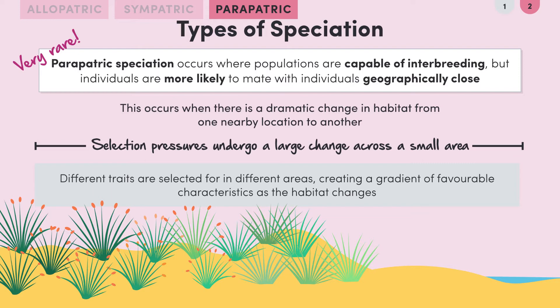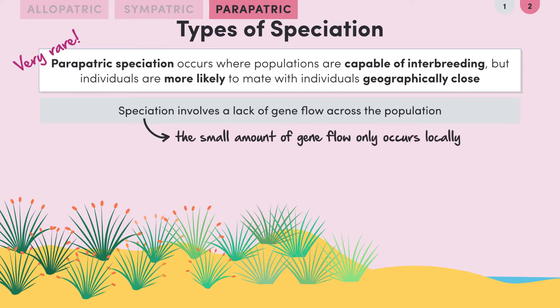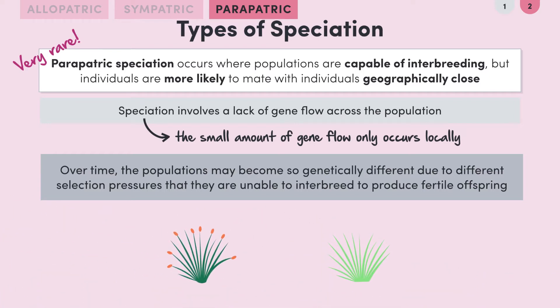Like with allopatric and sympatric speciation, parapatric speciation involves a lack of gene flow in the population. There is some gene flow, but this only tends to occur locally. Because there are varying selection pressures across the population due to the change in habitat, genetic information in different subgroups of the population would change. Eventually, individuals in the subgroups wouldn't be able to interbreed and produce fertile offspring anyway — they're now a new species.